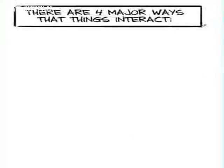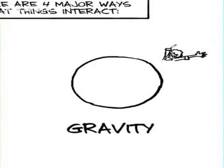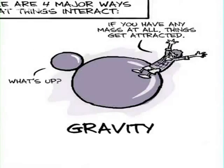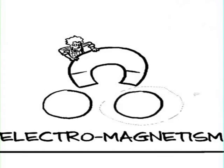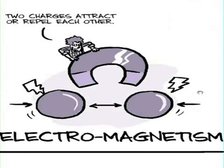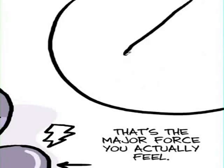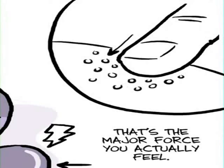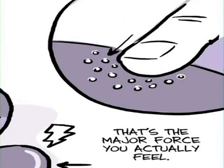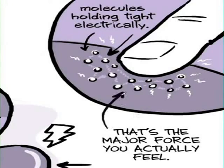There's four major ways that things interact. There's gravity. If you have any mass at all, things get attractive. There's electromagnetism, which is like two charges repel each other. And that's the major force that you actually feel. If I press down on this table, the reason the table doesn't get crushed or pushes back is that the molecules inside the table are holding tight on each other electrically.